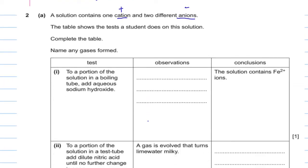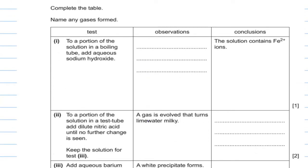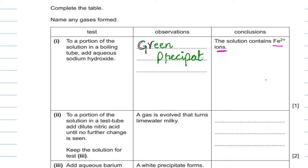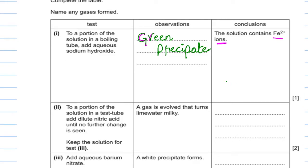There is a salt solution where different tests are going to take place. To a portion of the solution in a boiling tube, add aqueous sodium hydroxide. By adding aqueous sodium hydroxide, Fe2+ ions are confirmed — in the presence of Fe2+ ions it will give us a green precipitate. So for Fe2+ ions we have green precipitates.